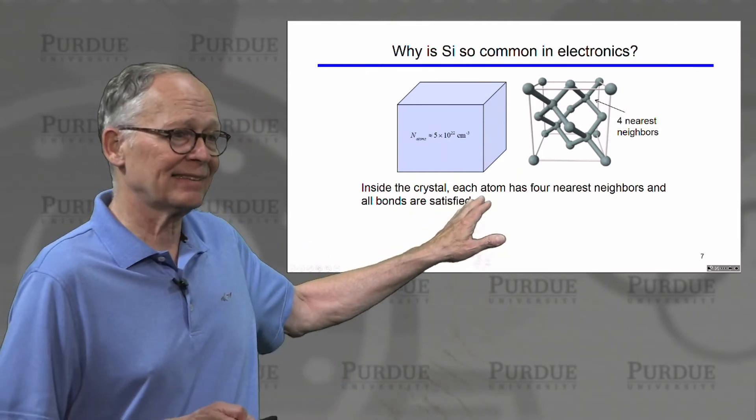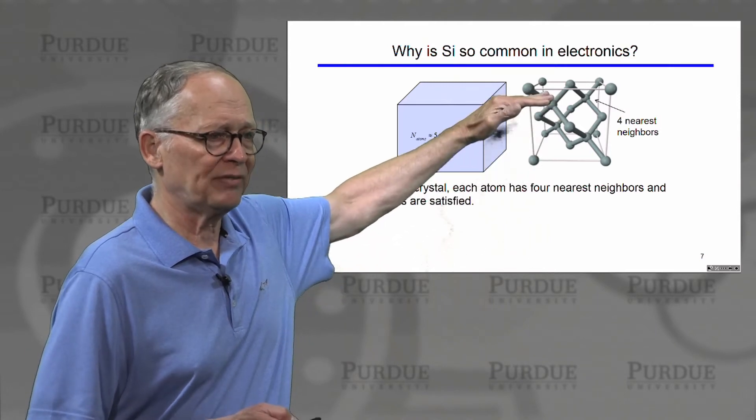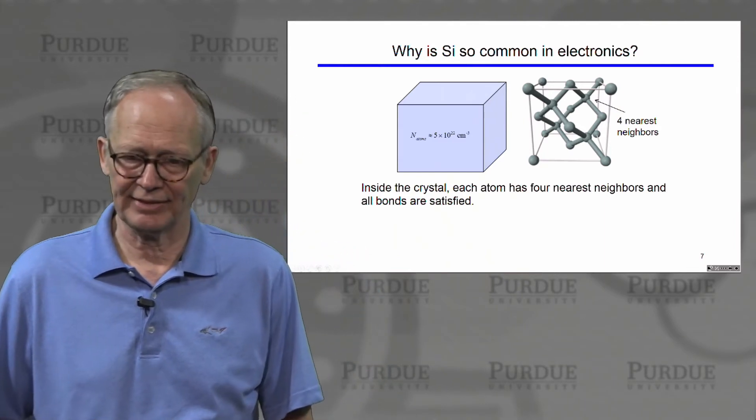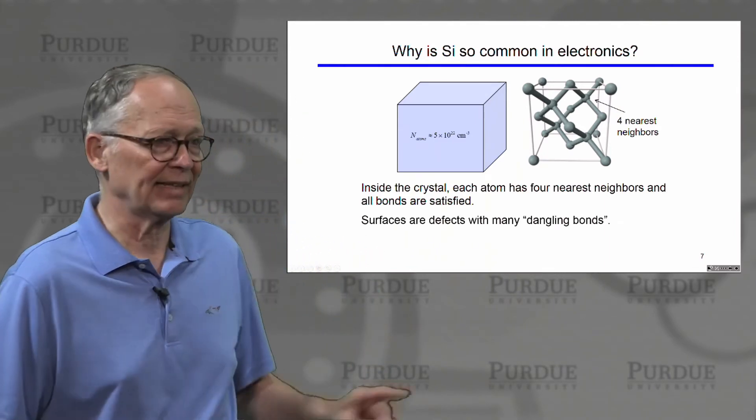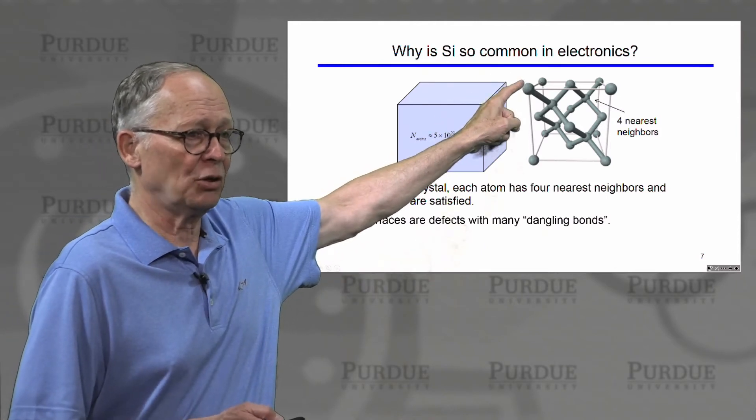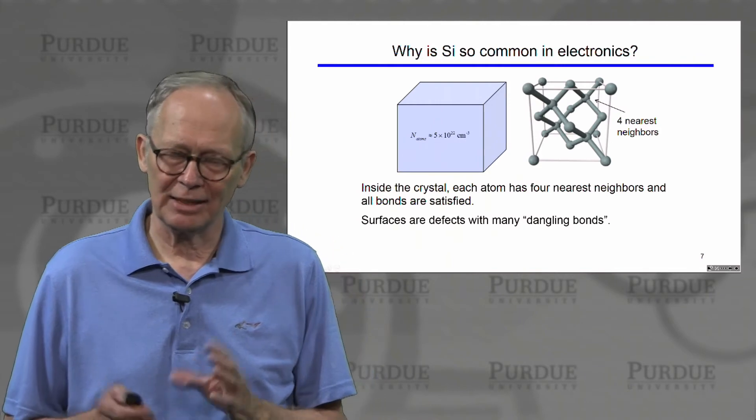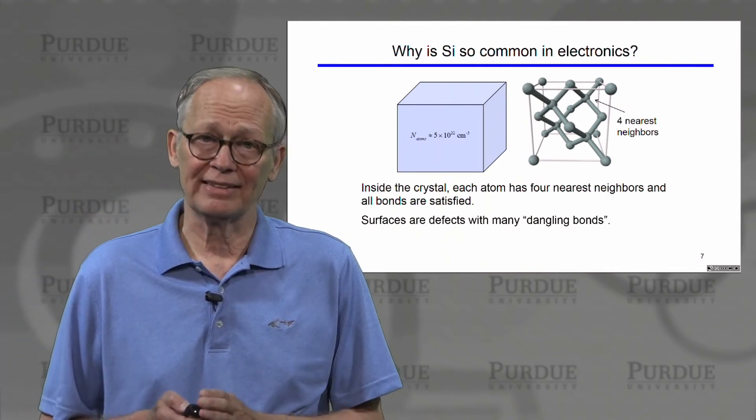Recall that inside the crystal, each atom has four nearest neighbors, but we've got to terminate the crystal on a face somewhere. And we may build our device on that face. But the surface is a place where there are lots of defects. The atoms on the surface don't have atoms above them to bond to. This leads to dangling bonds. There are electrons that have nothing to bond to. These create defects.